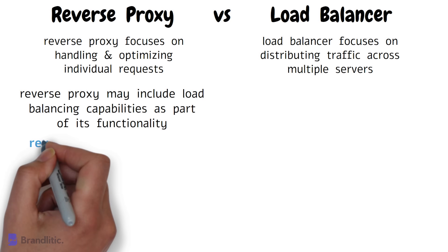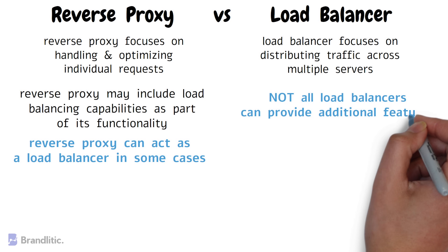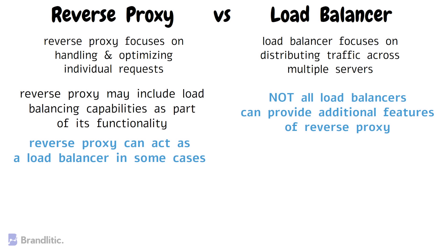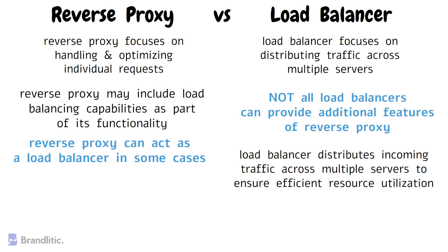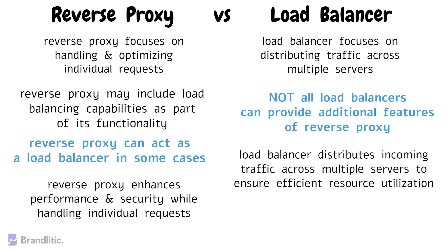This means that a reverse proxy can act as a load balancer in some cases, but conversely, not all load balancers can provide the additional features of a reverse proxy. That's why we can say that a load balancer distributes incoming traffic across multiple servers to ensure efficient resource utilization, while a reverse proxy acts as an intermediary between clients and servers, enhancing performance and security while handling individual requests.